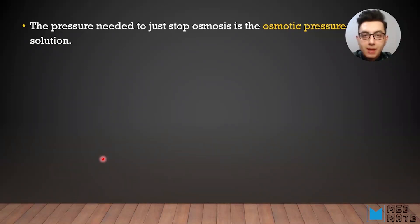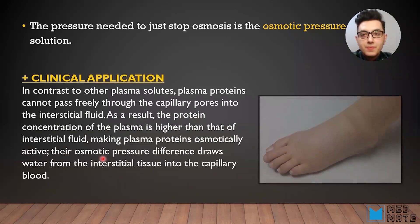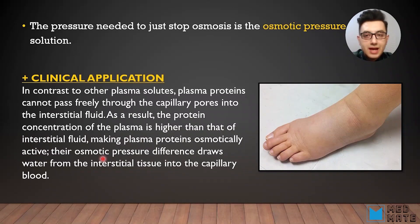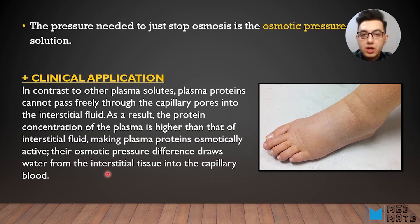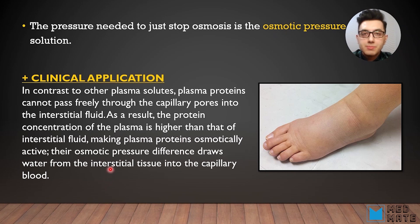The pressure needed to just stop osmosis is the osmotic pressure of the solution. This is clinically important because patients suffering from cirrhosis or impaired liver disease, when the concentration of plasma proteins is low, these plasma proteins are osmotically active — they pull water out from our interstitial tissue, preventing water from accumulating in our tissues.